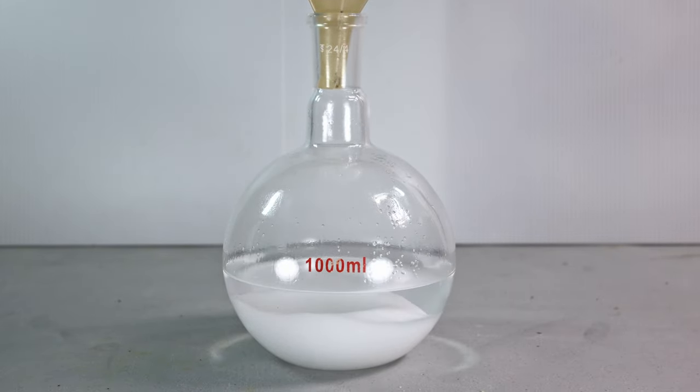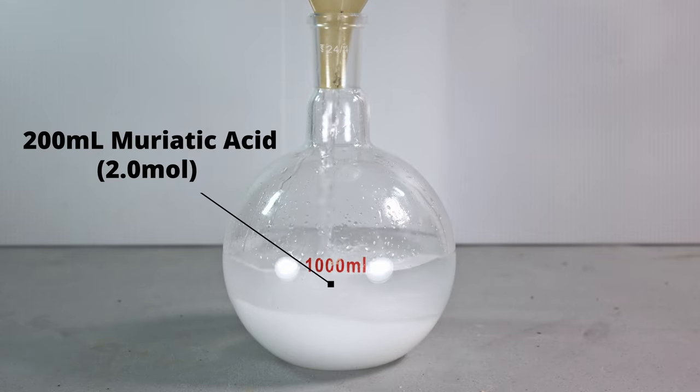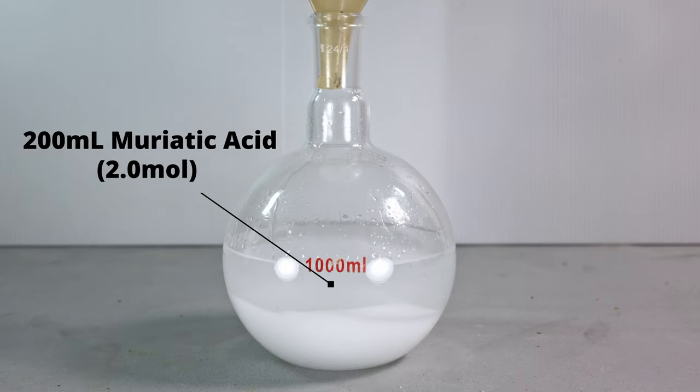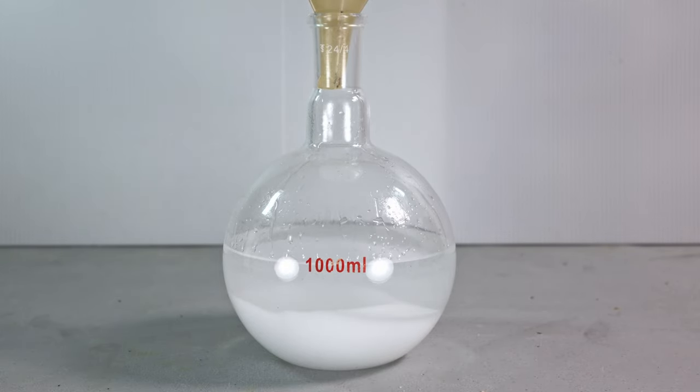Now I'm going to pour in 200 milliliters of muriatic acid. Not only does this provide extra hydrogen chloride, but with the water content in it, it also provides a buffer so all the hydrogen chloride doesn't escape when I add the sulfuric acid.